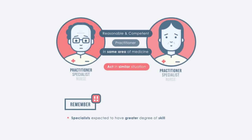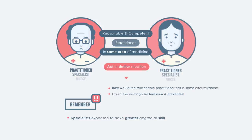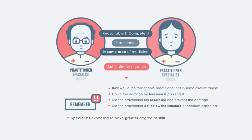What should thus be asked is how the reasonable practitioner would have acted, whether they could have reasonably foreseen the damage and prevented it, but failed to do so, and thus acted below the standard of conduct expected. Like all other civil matters, the onus is on the patient plaintiff to prove everything on a balance of probabilities.